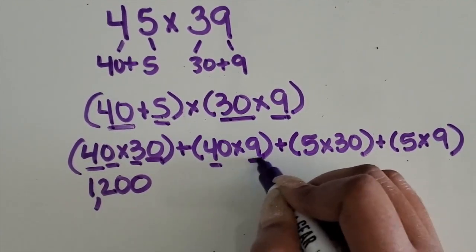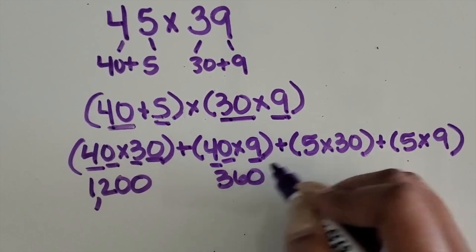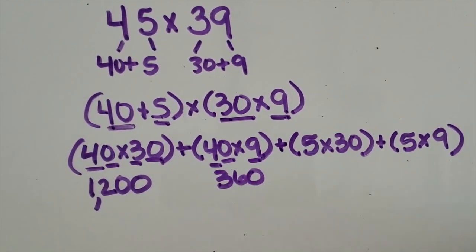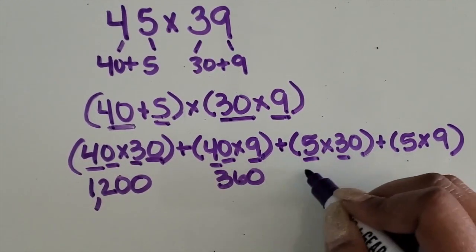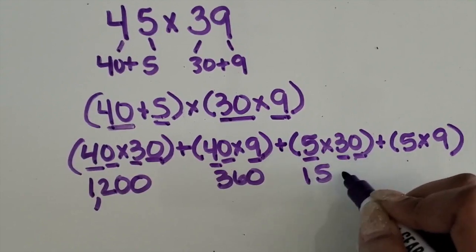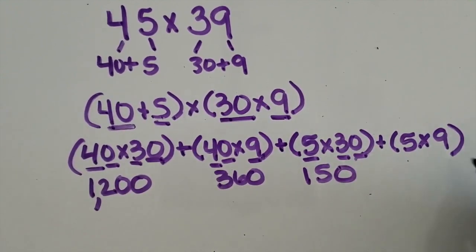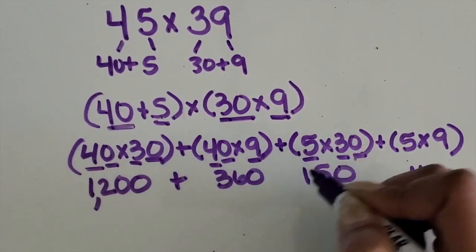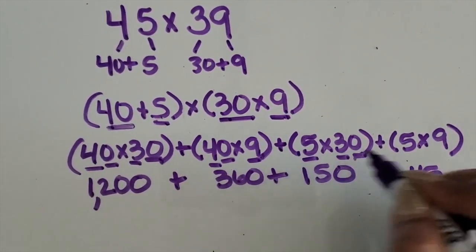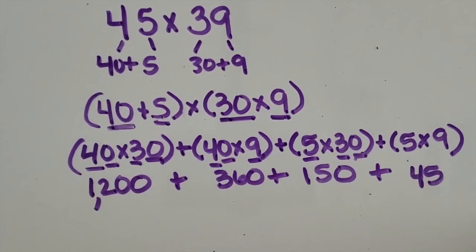4 times 9 is 36, so 10 times greater is 360. 5 times 3 is 15, so 10 times greater is 150. And 5 times 9 is 45. So now we have those partial products and we're going to add them back up together.